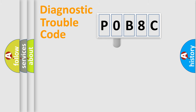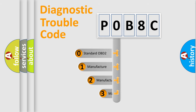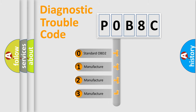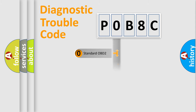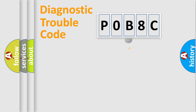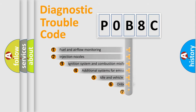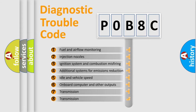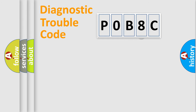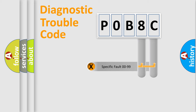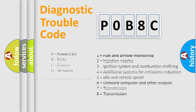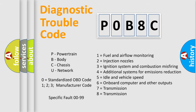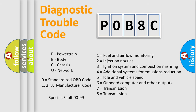This distribution is defined in the first character of the code. If the second character is expressed as zero, it is a standardized error. In the case of numbers 1, 2, or 3, it is a more specific manufacturer-defined error. The third character specifies a subset of errors, valid only for the standardized DTC code. Only the last two characters define the specific fault of the group.